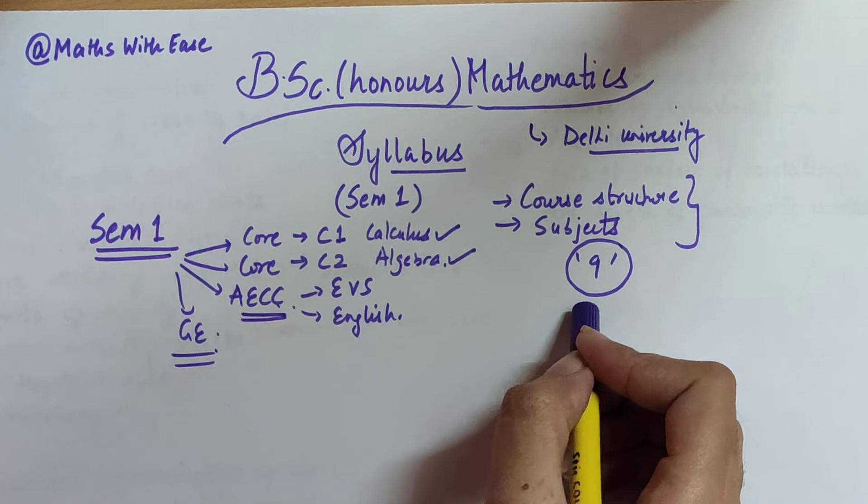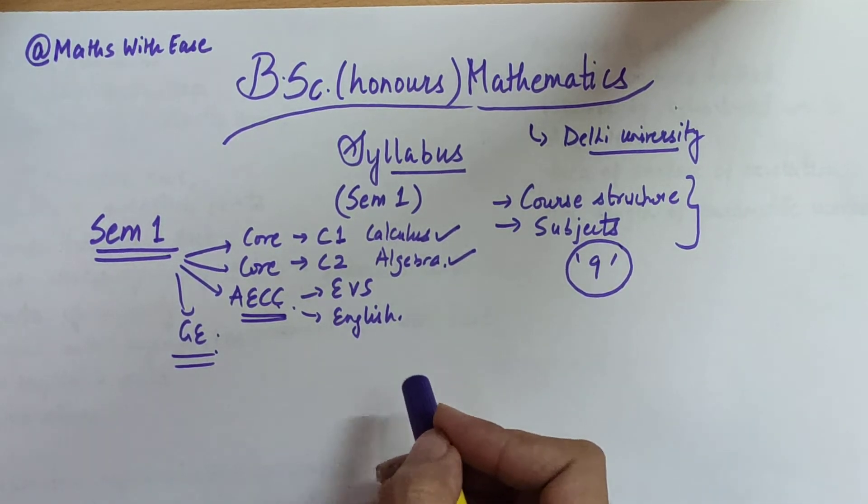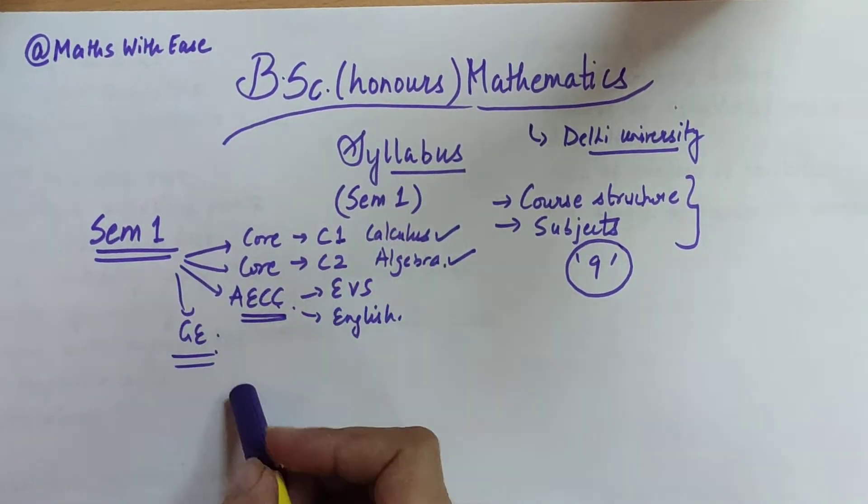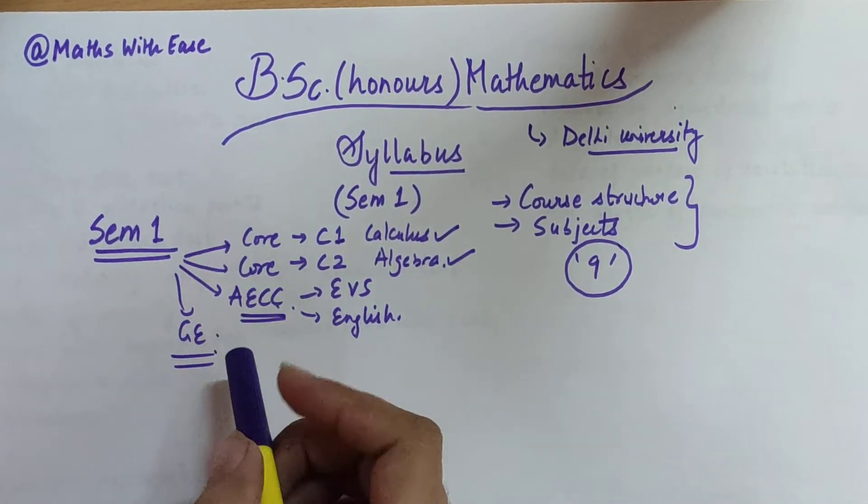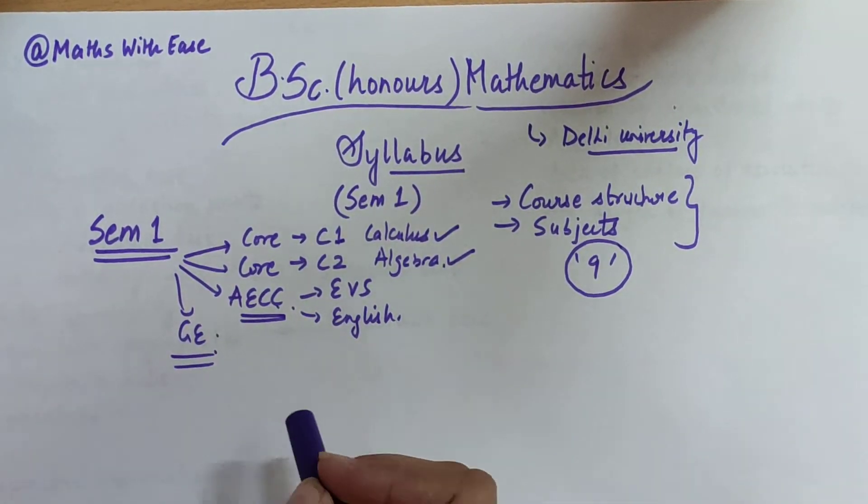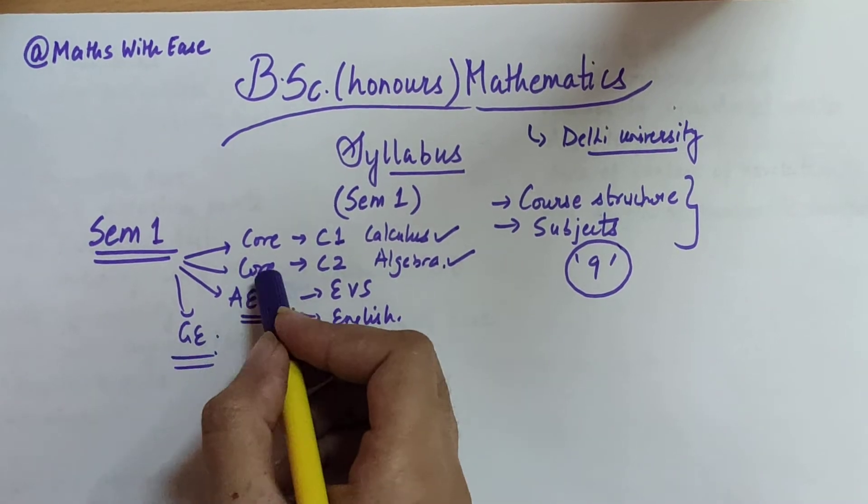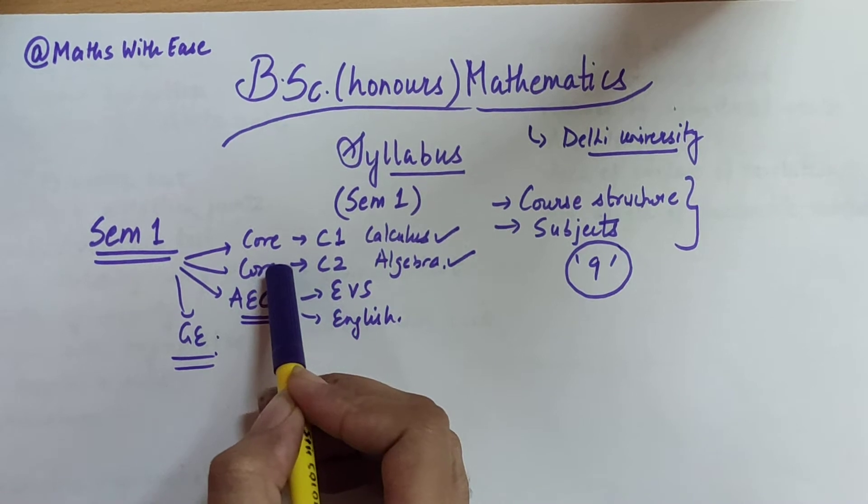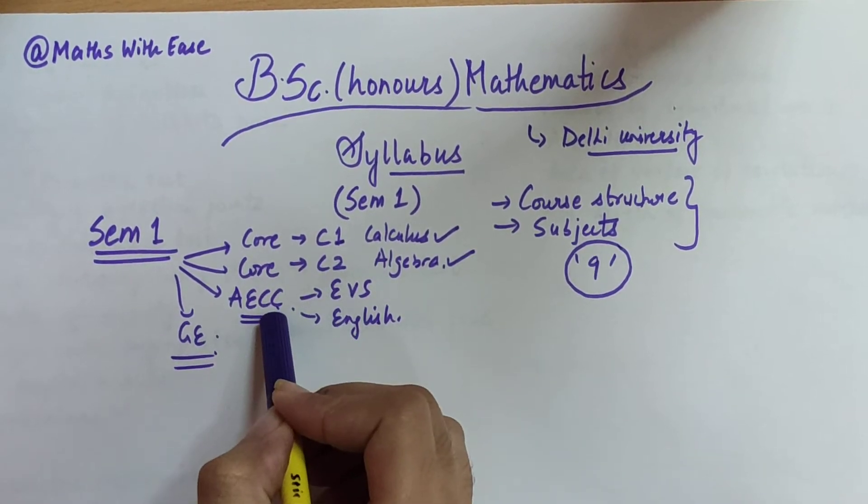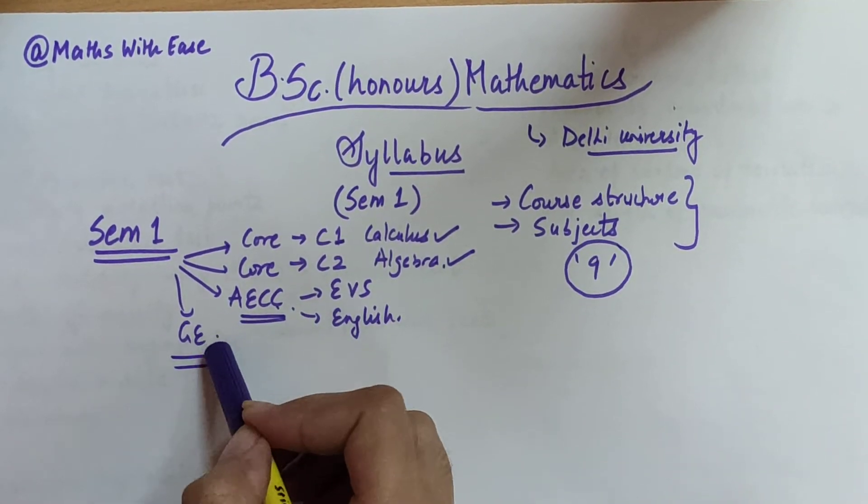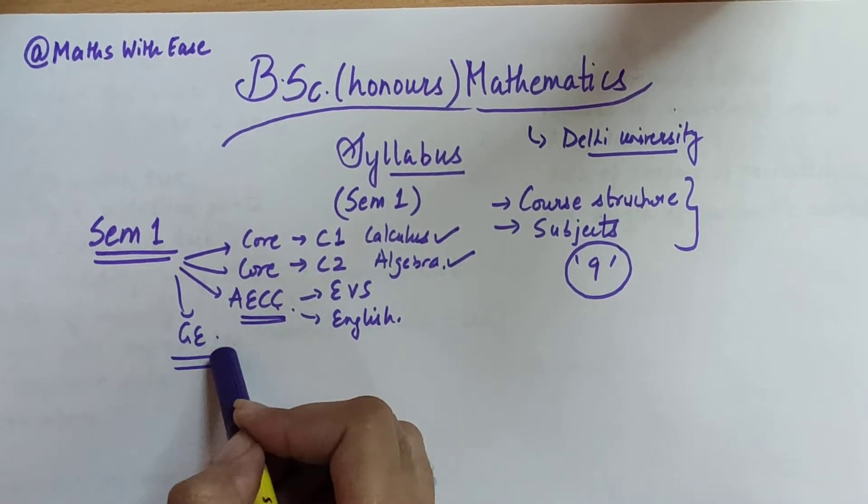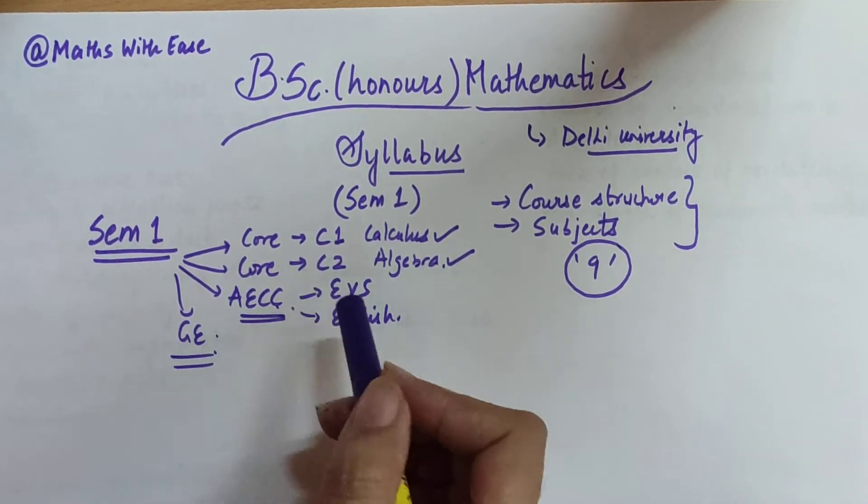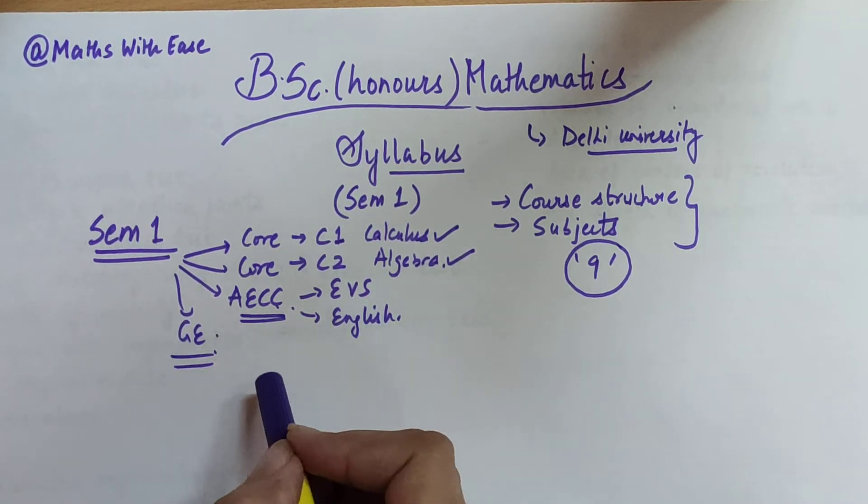Now let's move on to our aim of today's video. Coming to Semester 1 of this particular course, you need to give four exams. The first two exams are your core exams, your third exam is your AECC, and your fourth exam is your GE. GE is Generic Elective and AECC is Ability Enhancement Compulsory Course.